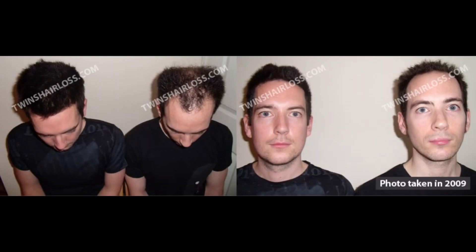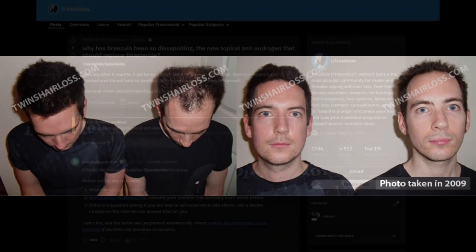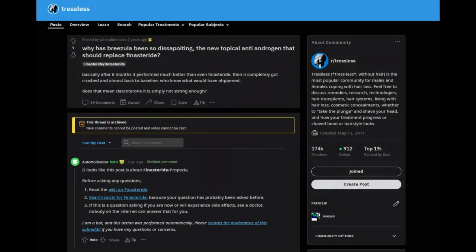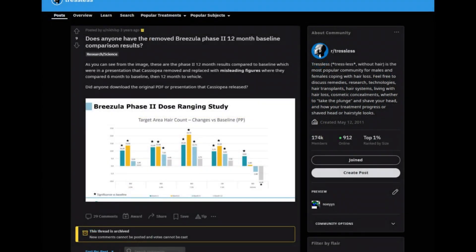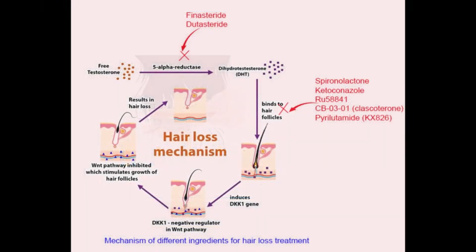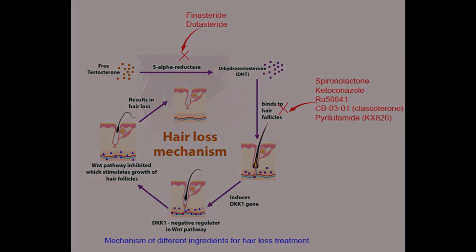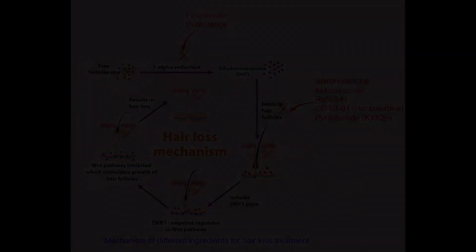I would encourage a different mindset to be adopted, as I have seen people be disappointed with the reported hair gains from CB-03-01 or clascoterone's clinical trials for androgenetic alopecia. Topical antiandrogens can be firstly seen as a point of stabilization. If you're blocking the androgen receptor on your scalp day by day, DHT cannot bind to the hair follicle, and thus the hair follicle itself can be stabilized and potentially revert to its original pre-androgenetic alopecia growing condition.